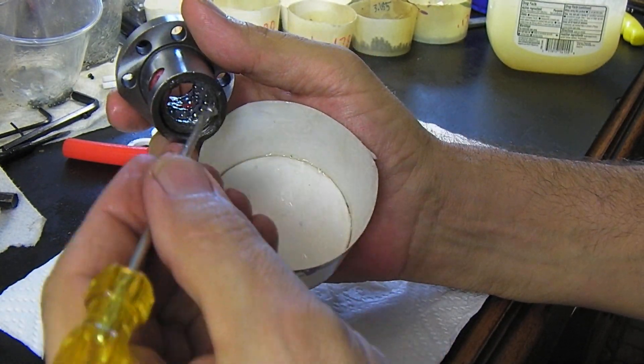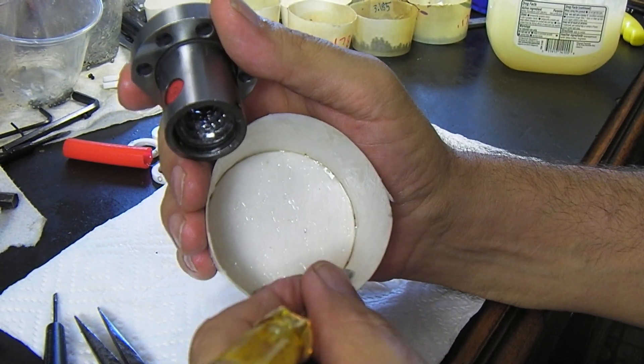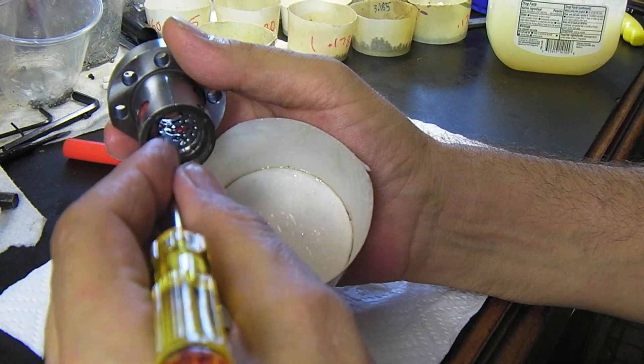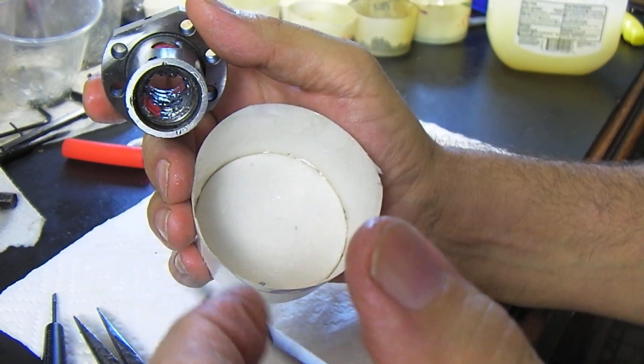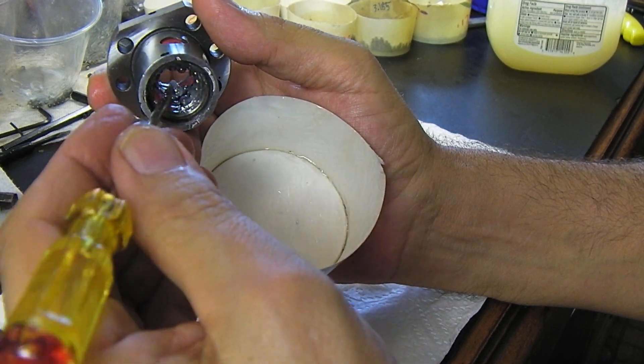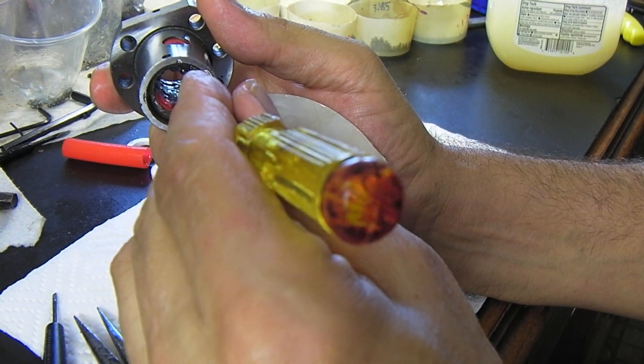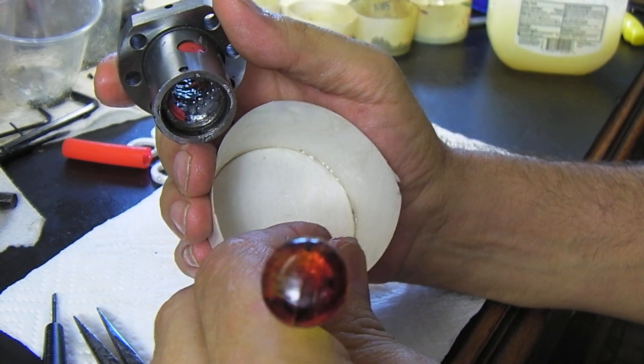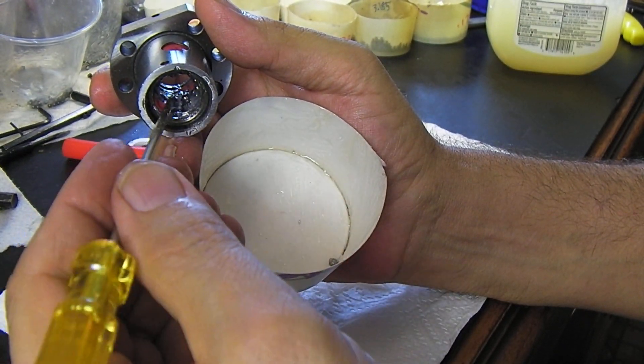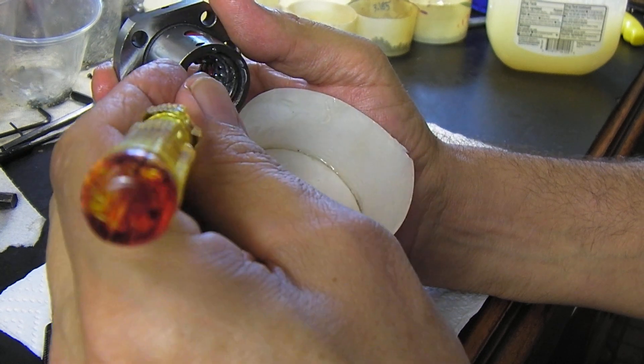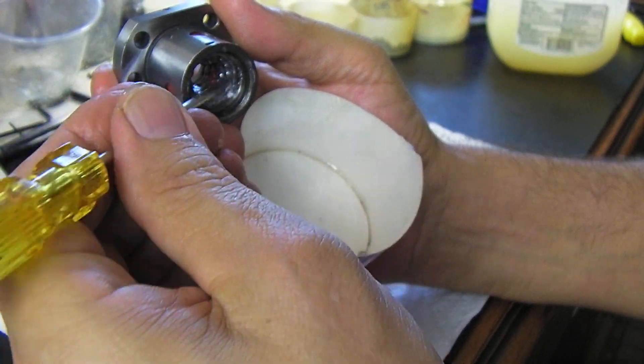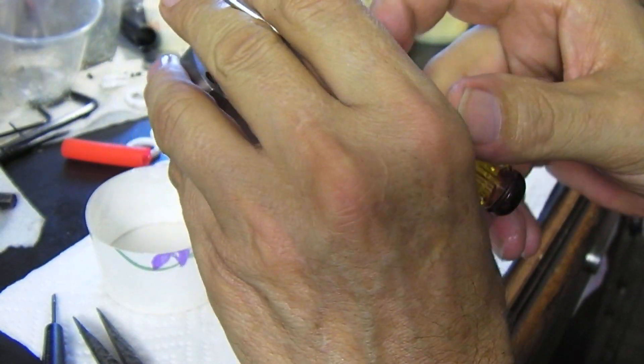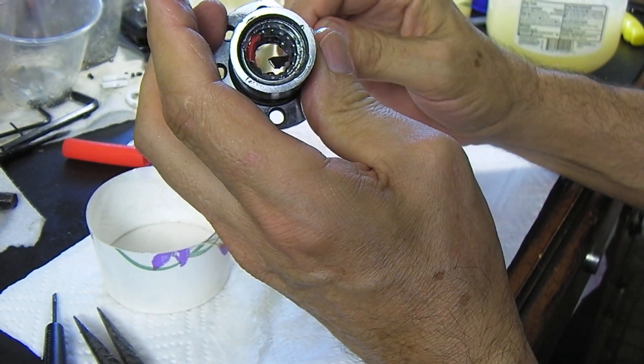We're just about done with row number three. There's a little space there, so I can get one more ball in. That one popped out, maybe not. Okay, yeah, we can't. So that one's extra.